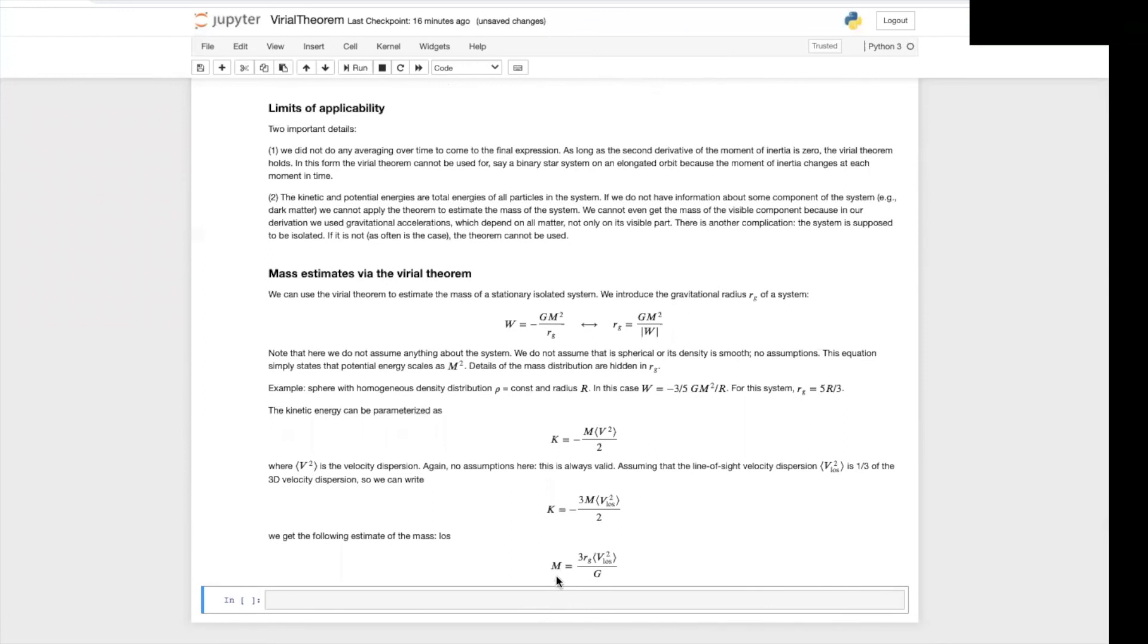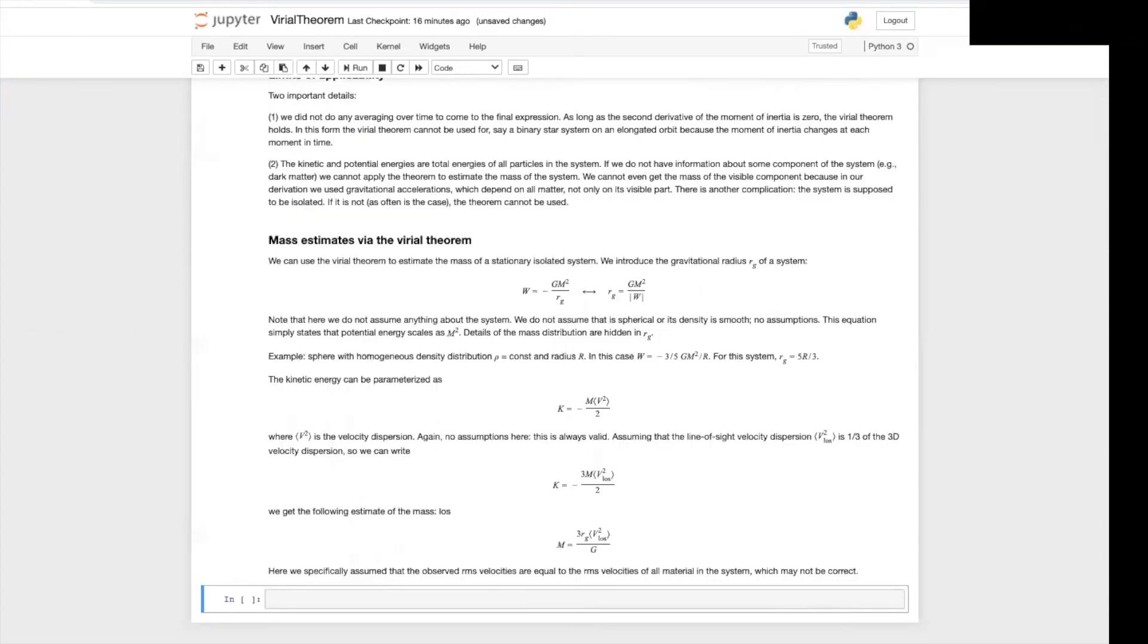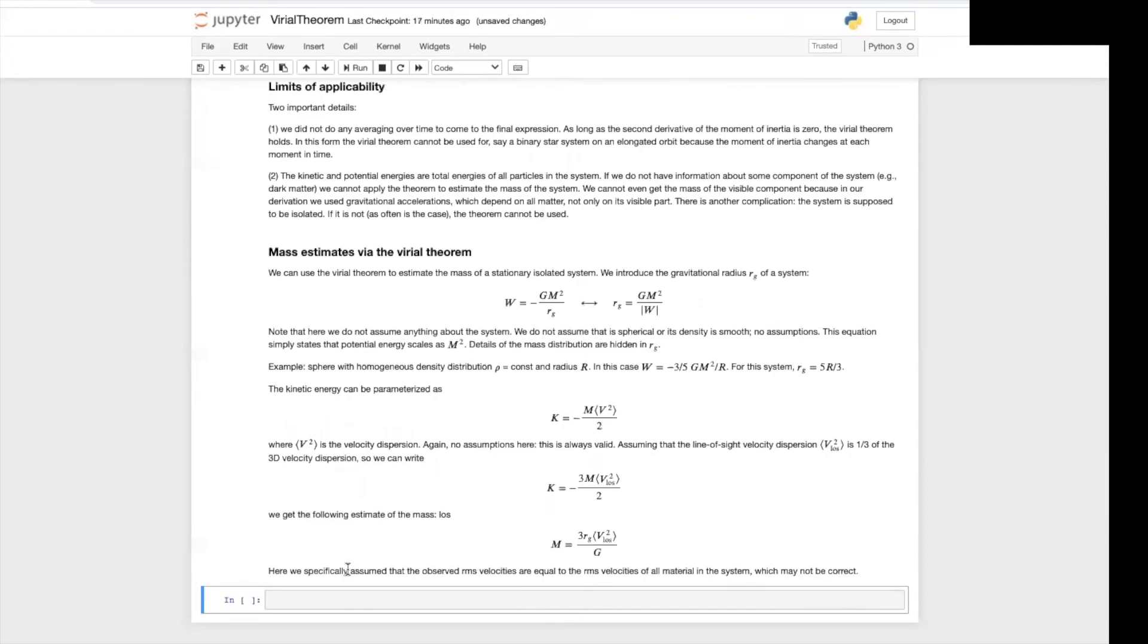So the mass is given by three times the gravitational radius, the velocity dispersion in the line of sight over the gravitational constant. So here we specifically assume that the observed dispersion velocities are equal to the dispersion velocities of all the material in the system, which may not be correct.